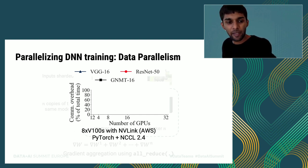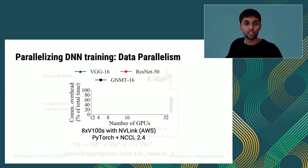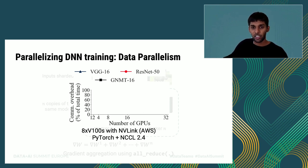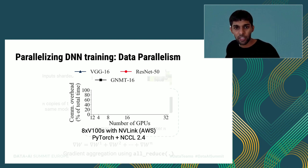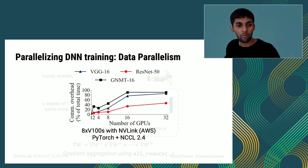However, this periodic communication can get expensive extremely quickly, as we observe empirically using multi-GPU servers available on Amazon EC2 and the PyTorch training framework. In this graph, I'm showing communication overhead as the percentage of total time on the y-axis and the number of GPUs used in training on the x-axis. We observed that as much as 80% of total training time is spent on communication.